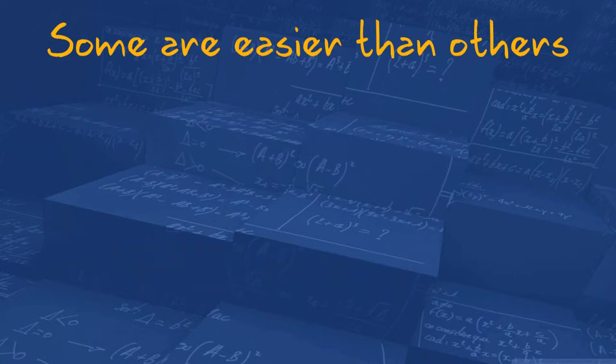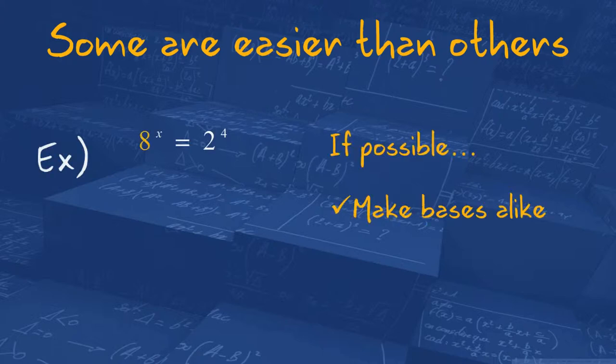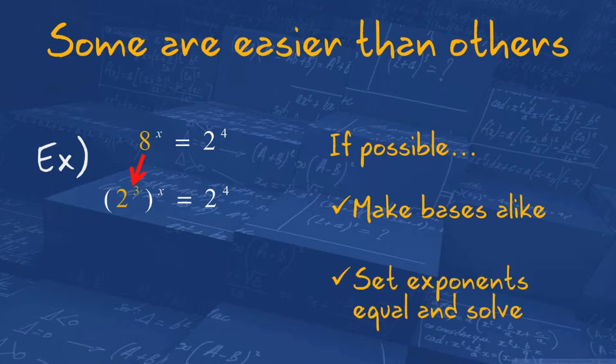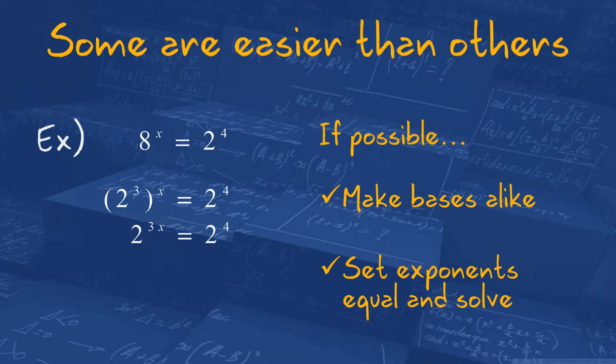What if the bases aren't the same? Well, if you can rewrite them so they are, then do so. For example, we've got 8 to the x equals 2 to the 4th. I can rewrite that 8 as 2 cubed. So 2 cubed taken to the power of x — we can multiply the exponents and set the exponents equal to each other and solve. So 3x equals 4, which means x equals 4 thirds, or 1 and 1 third.